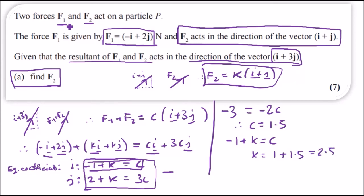Ah not bad is it? So therefore going back to the top, f2 equals k i plus k j, hence f2 equals 2.5 i plus 2.5 j.